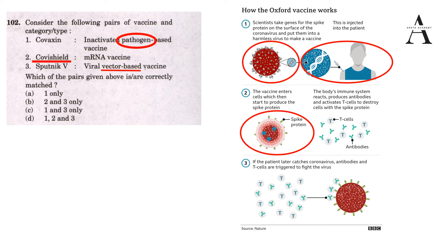Once the spike protein is produced within our body, the immune system starts reacting - it starts producing antibodies and activates T-cells to destroy cells with the spike protein. This is essentially a mock drill done with the adenovirus carrying the genetic composition of the spike protein. Our body completes this mock drill and is ready to fight any future coronavirus infection. Later, if anyone catches coronavirus, the antibodies and T-cells will be triggered to fight the virus.